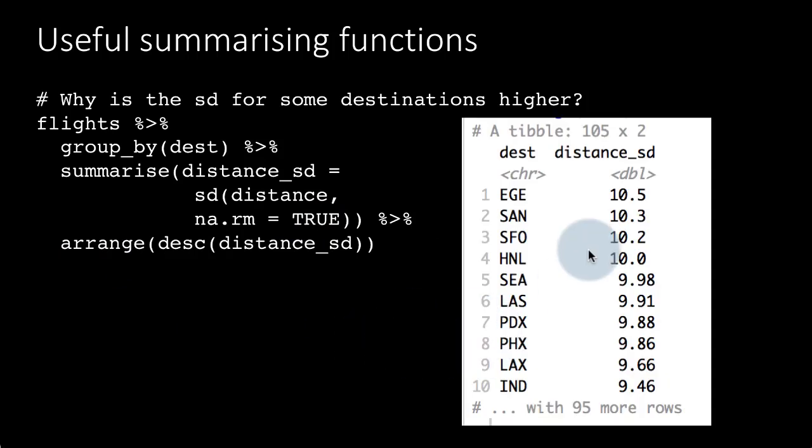So they could be those kinds of explanations. But you are seeing here that there is a variability in the standard deviation of the distance to certain places. You may say it's very close, 9.46, 10.5. Well, that's a 10 percent increase. It's quite significant.